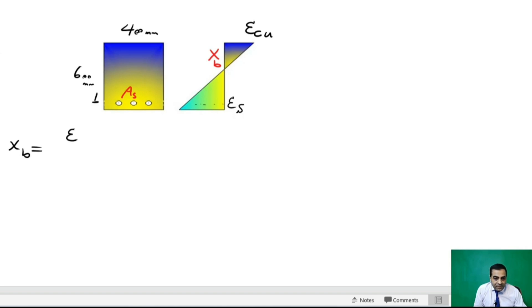The strain of crushing concrete divided by the strain of concrete plus the strain of longitudinal bar, times the effective depth. That is the relation.